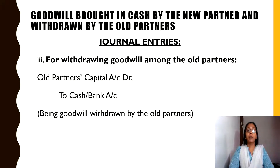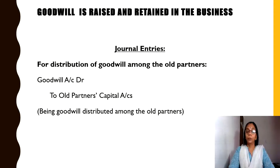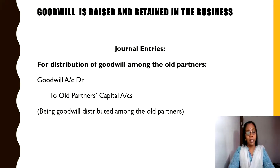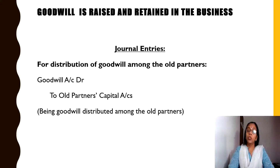The third situation is goodwill raised. No money comes in; it is only created — raised meaning it is created in the business and kept in a separate account called the goodwill account. So goodwill is raised and retained in the business. The journal entry for goodwill being raised: Goodwill Account Dr. to Old Partners' Capital Accounts. This goodwill which is raised is distributed among the old partners. Usually, the old ratio is to be observed in the distribution.